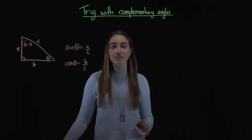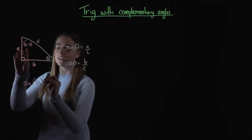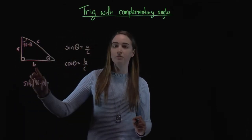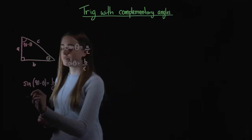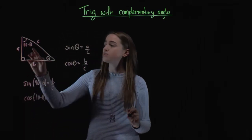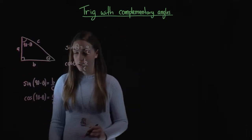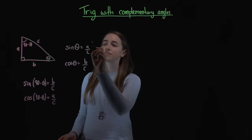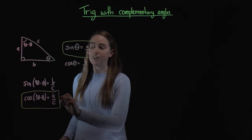Now if we do the same thing for this angle instead — we're going to have sine of this angle, which is our 90 minus theta. That's going to be equal to the opposite over the hypotenuse. Opposite this angle is our b and our hypotenuse is still c. And then if we find cos of that angle, we're going to have cos of 90 minus theta equals the adjacent over hypotenuse. Adjacent to this angle is our a, so we'll have a over c. Hopefully what you can see there is the relationships between those things we just found — sine theta was a over c and cos of 90 minus theta was a over c as well.